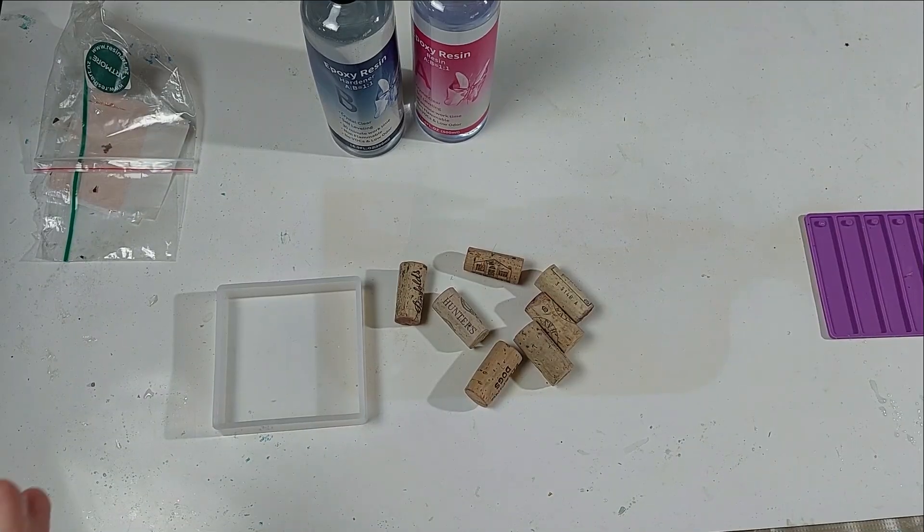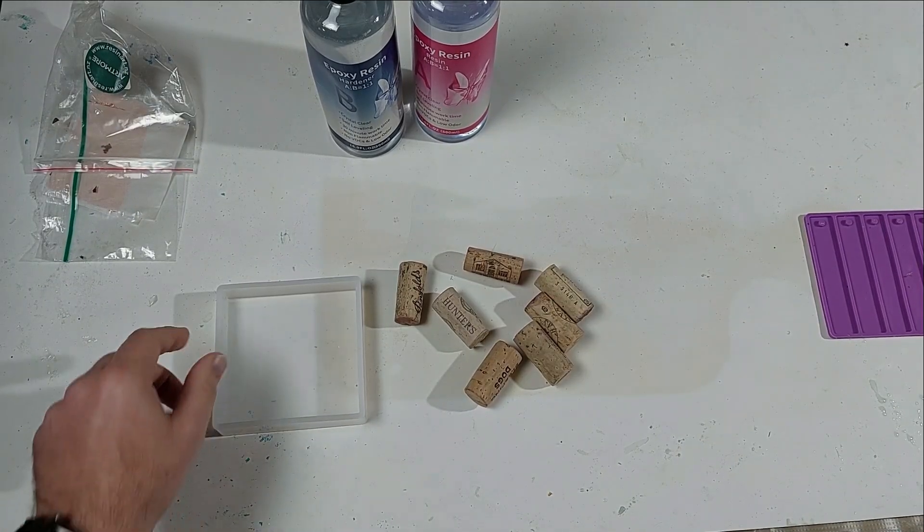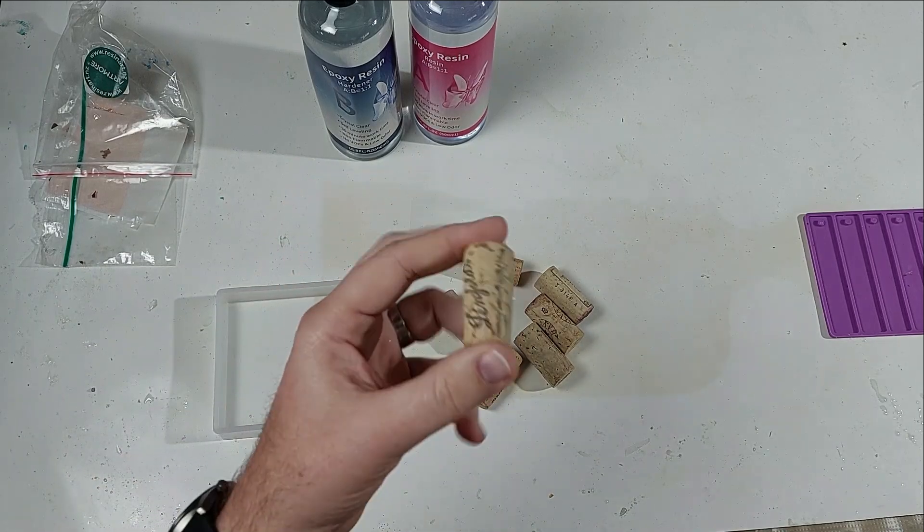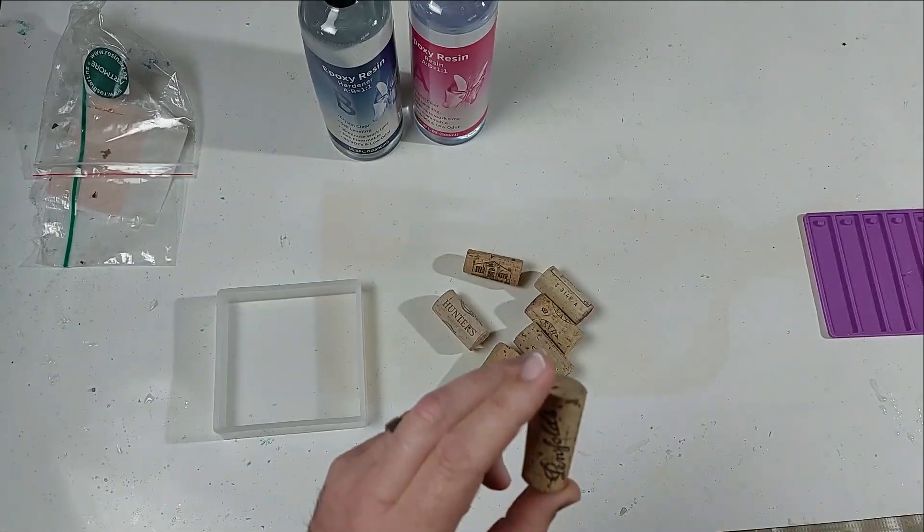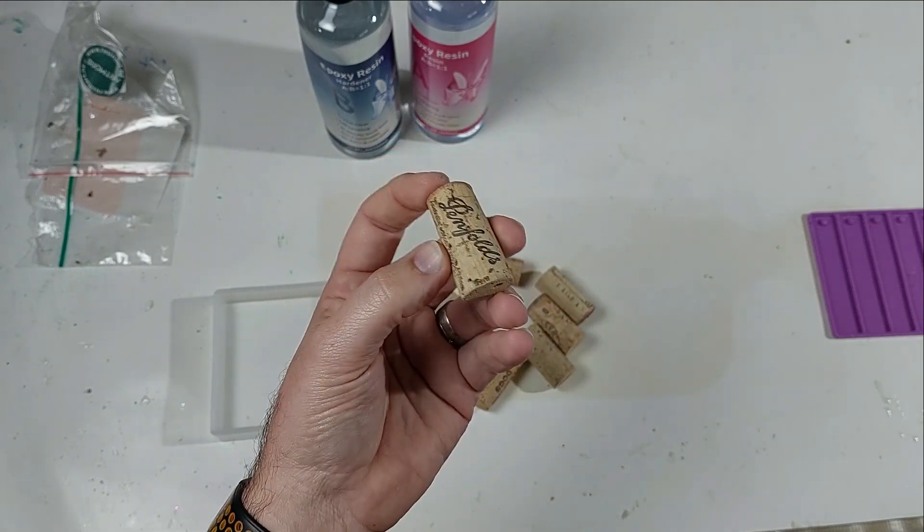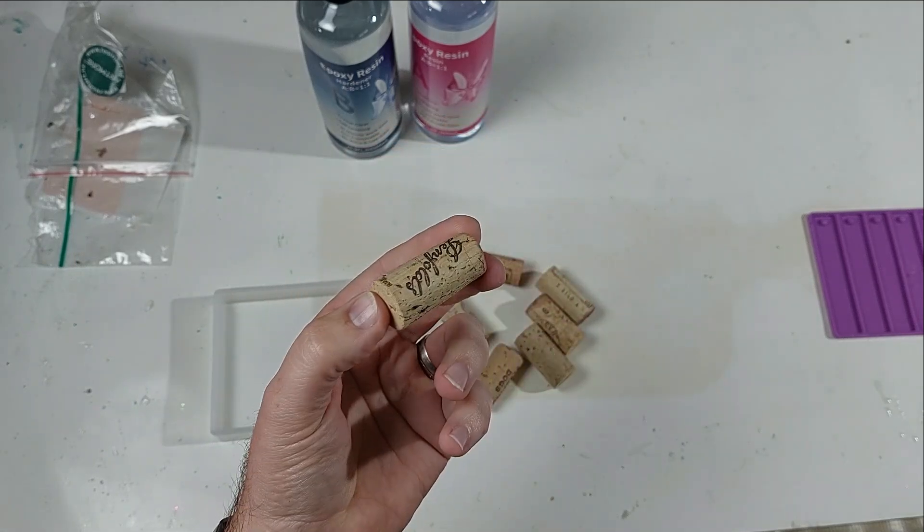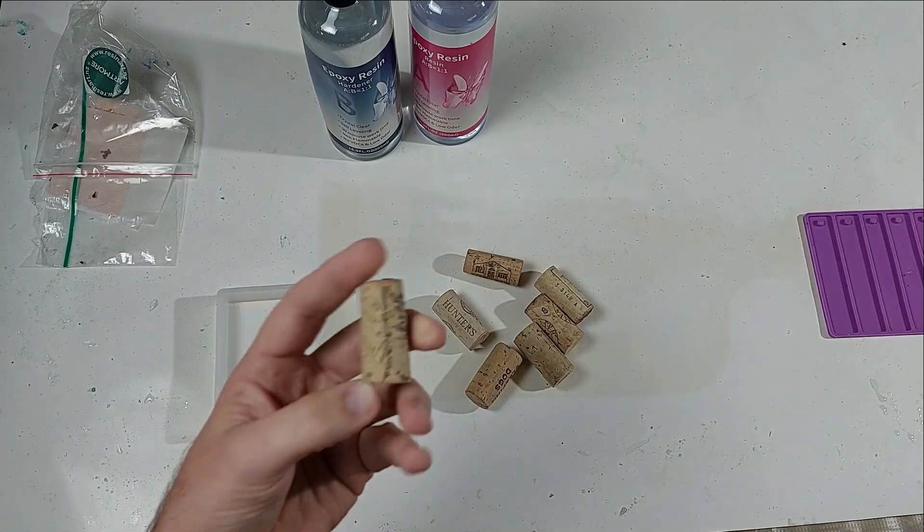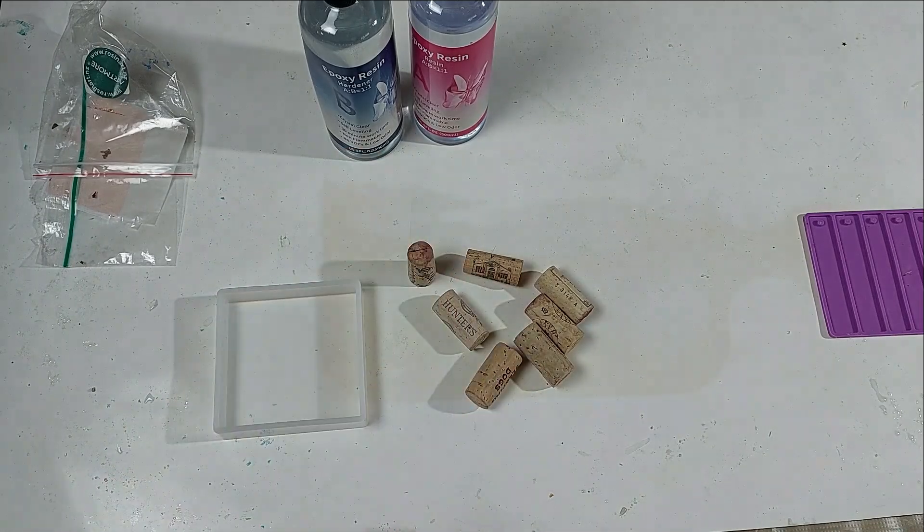So we're going to do two different tests with this one. First off we're going to do a clear on the bottom here and put some corks in there. I'm not going to do anything to try to pop bubbles. And corks are very porous, full of air. And so it's a good way to test to see how this resin reacts with air bubbles.